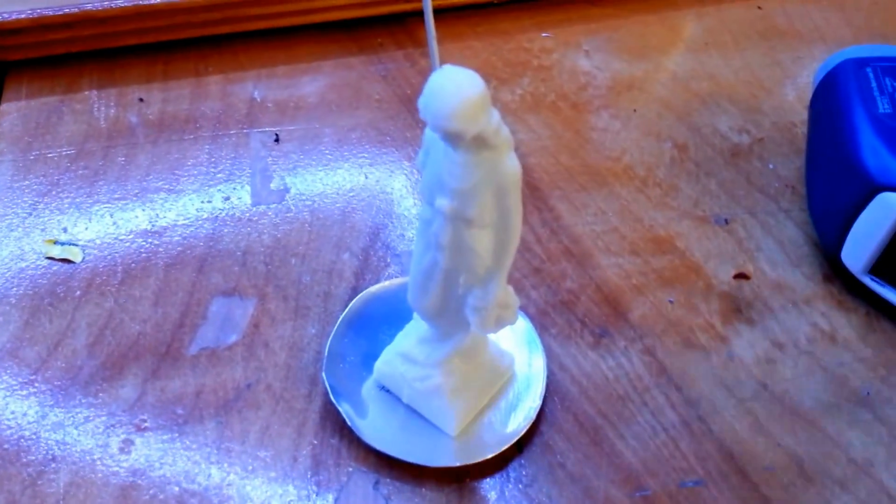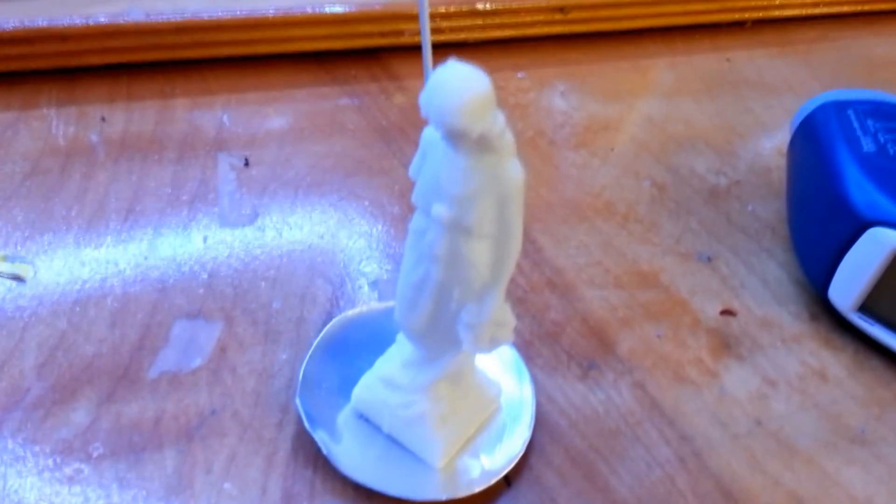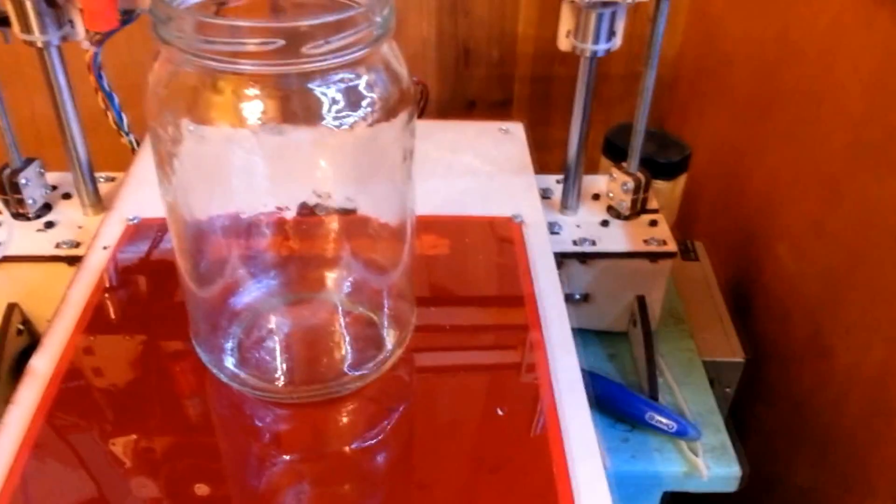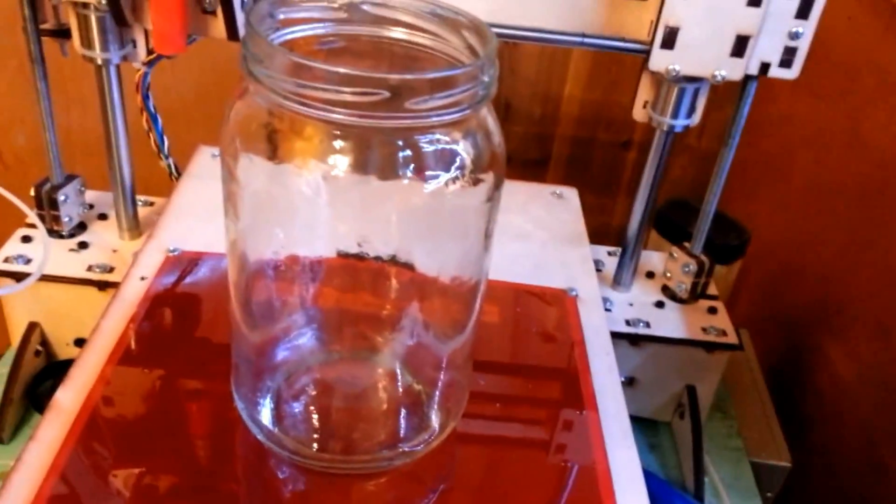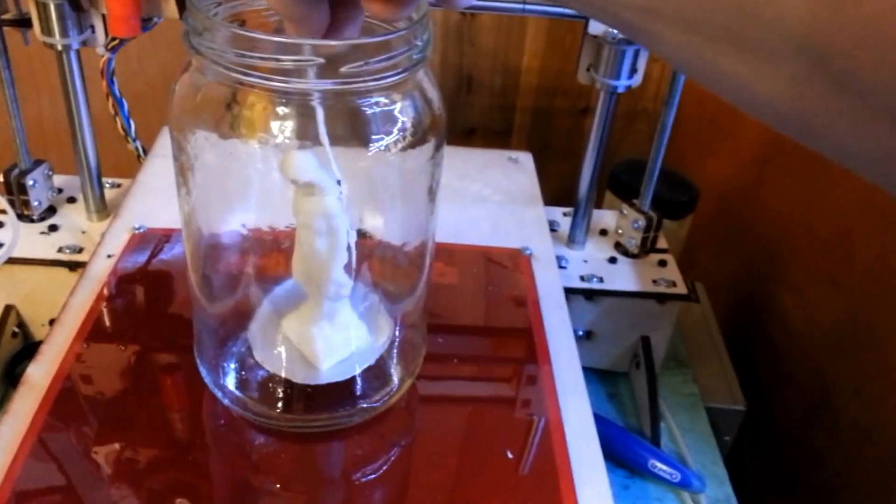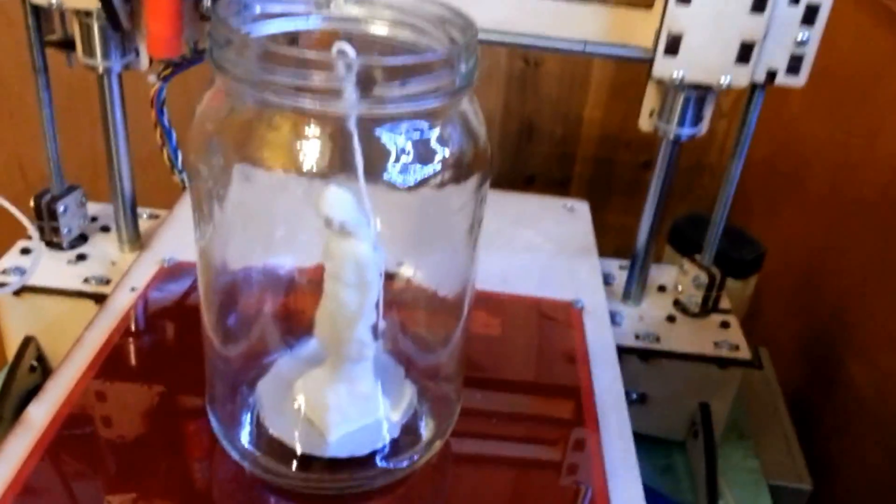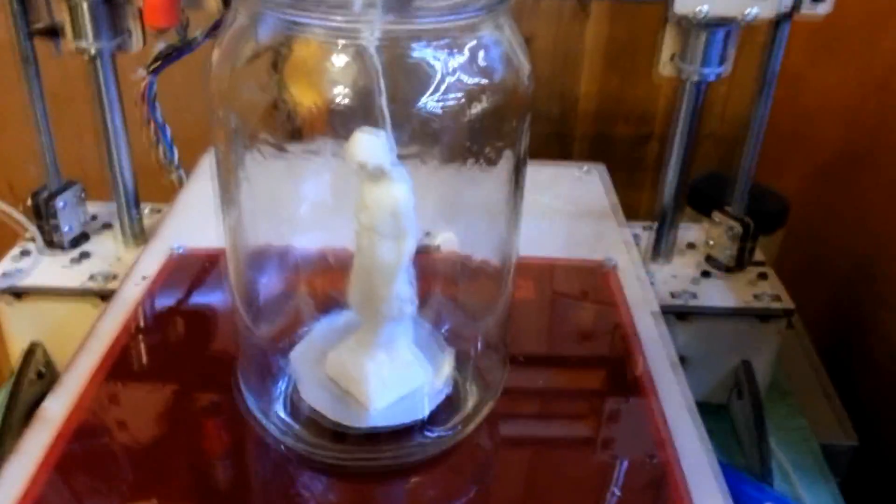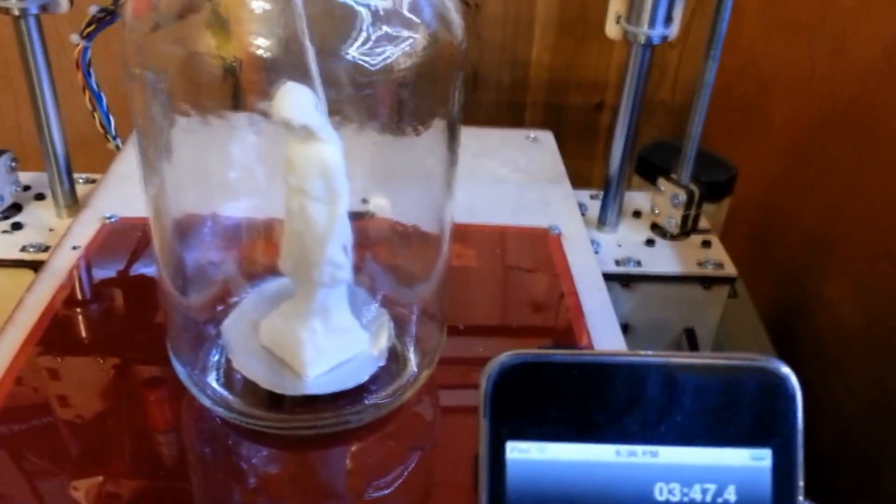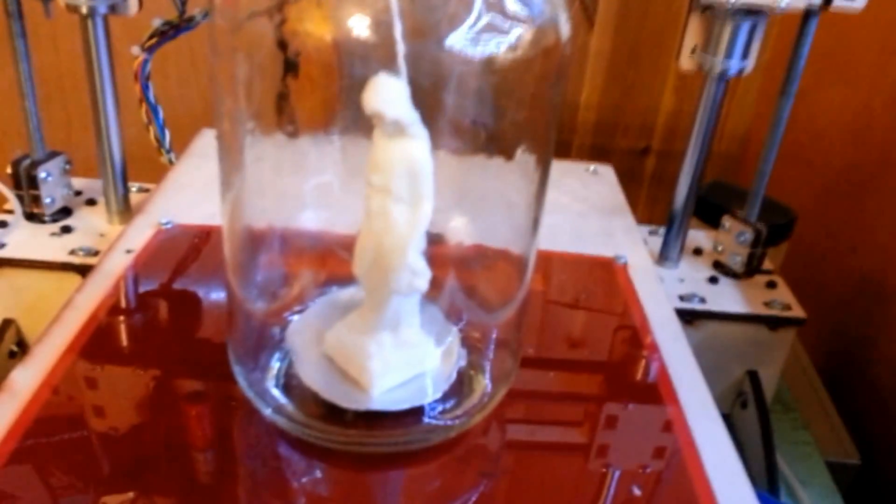The first model we're going to be using is the cemetery statue I printed out this morning. Carefully place her inside. And you don't want her touching the walls because that will be a place where it might melt to the wall. Let's start the time and see how the vapor affects it. And we're going to come back in one minute intervals until we get a nice shine on her.